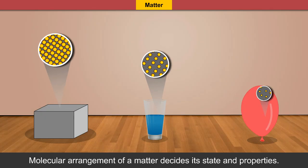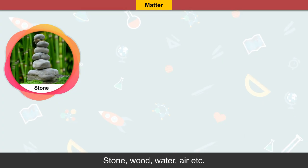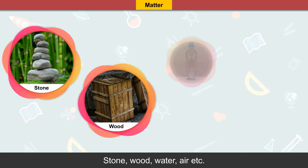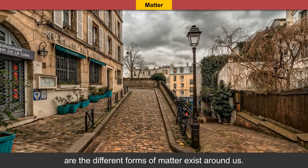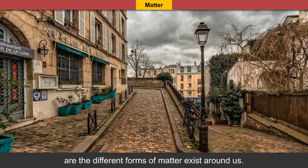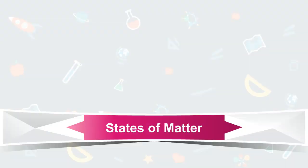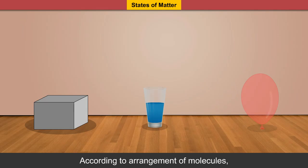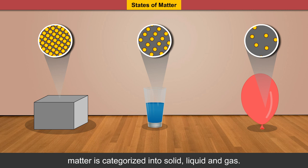Molecular arrangement of matter decides its state and properties. Stone, wood, water, air, etc. are the different forms of matter that exist around us. According to arrangement of molecules, matter is categorized into solid, liquid and gas.